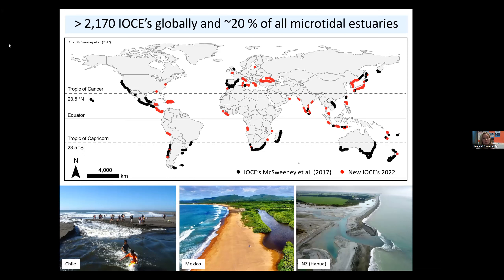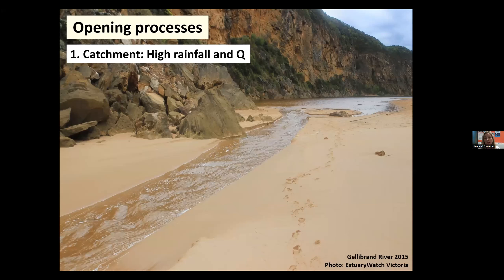We've been adding to this dataset over time. Originally we found about 1,500 intermittent estuaries around the world — our spots in black on this map — but adding to this dataset, largely when I'm procrastinating from other things, we've now found about 2,170 estuaries around the world that close. This is probably due to getting more regular imagery since our 2017 study. They're really common in wave-dominated settings and on rivers with variable flow. On our microtidal coast, they now comprise about 20% of all estuaries, and they have a variety of forms — really diverse in terms of their size, shape, and opening and closure regimes.